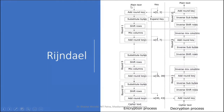There is a key expansion algorithm that expands the initial 128-bit key and generates a new 128-bit round key for each of the 10 rounds. In every round there is: Substitute Bytes, Shift Rows, Mix Columns, and Add Round Key. Before the first round starts, there is an initial Add Round Key operation outside of the regular rounds.